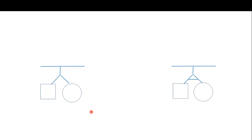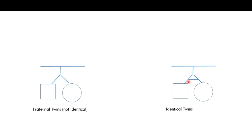There are also signs for twins. A single horizontal line with a vertical line branching into two lines indicates fraternal twins — that is, non-identical twins. Identical twins are shown by a slightly different sign with an extra connecting line between the two branches, indicating that they are identical twins.